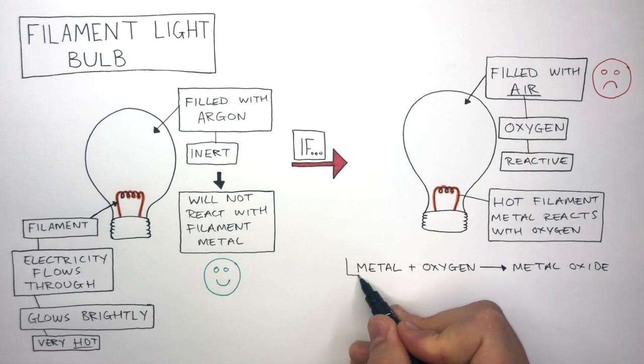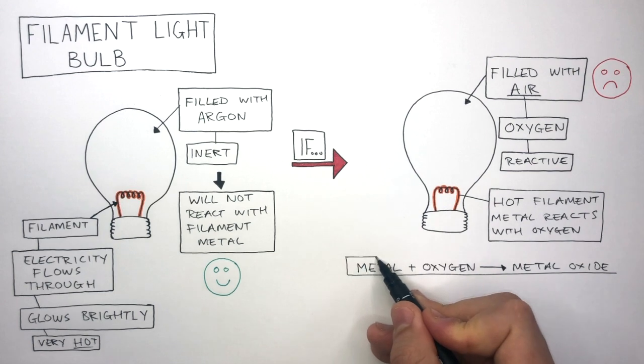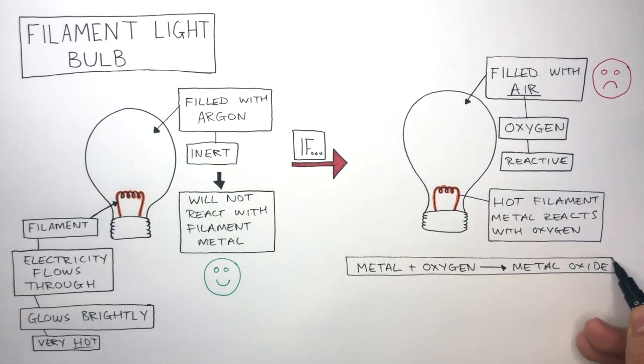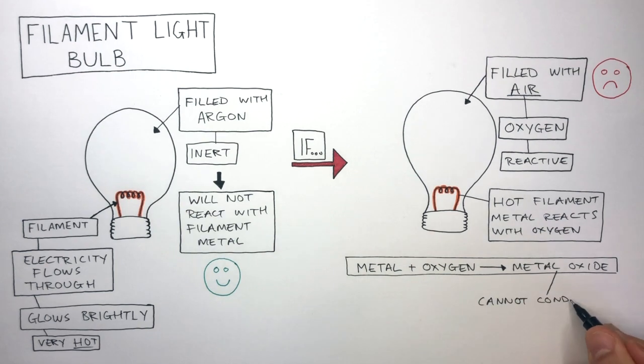The metal has properties of a metal. Oxygen has properties of a simple molecule. And the metal oxide has the properties of an ionic compound. So because the metal oxide has the properties of a solid ionic compound, there are no free or delocalized electrons. Therefore, the metal oxide cannot conduct electricity, and it stops working.